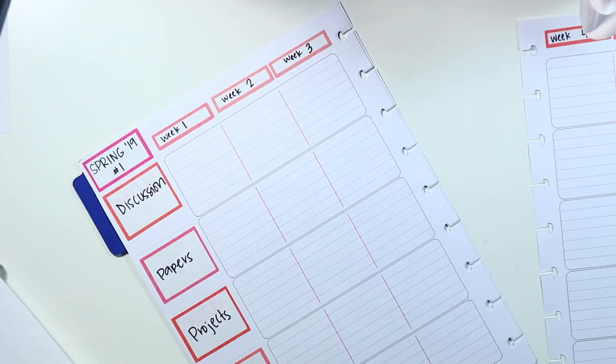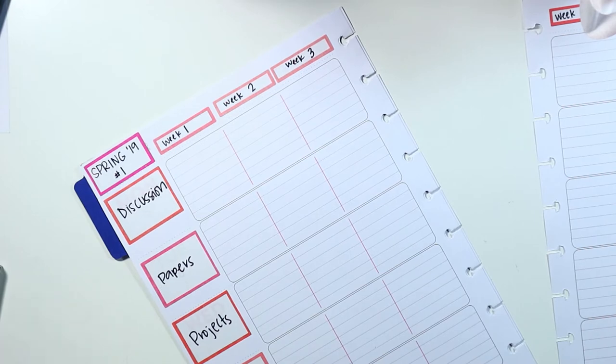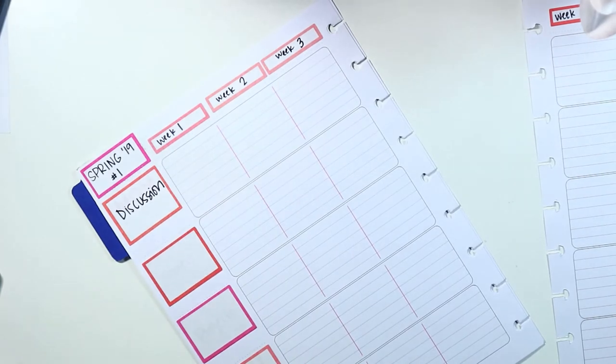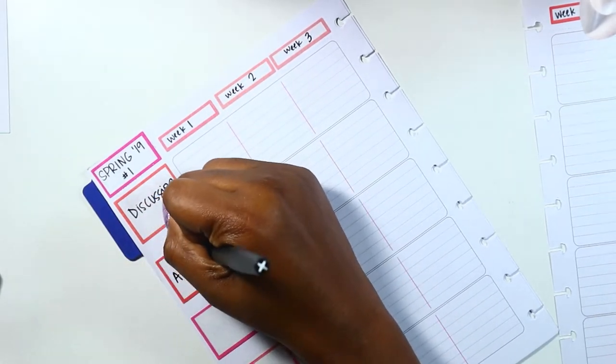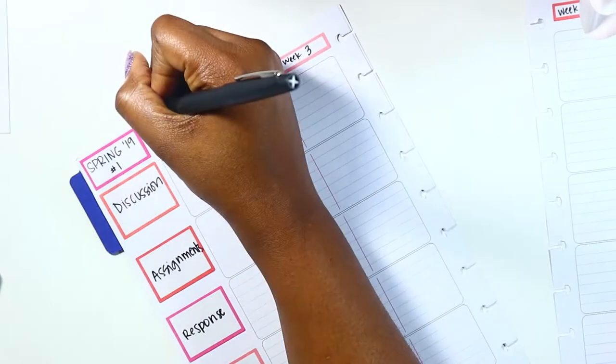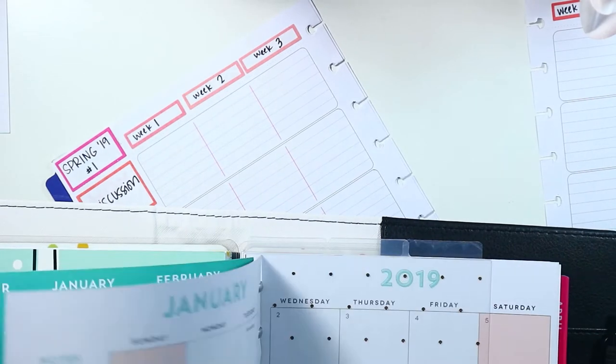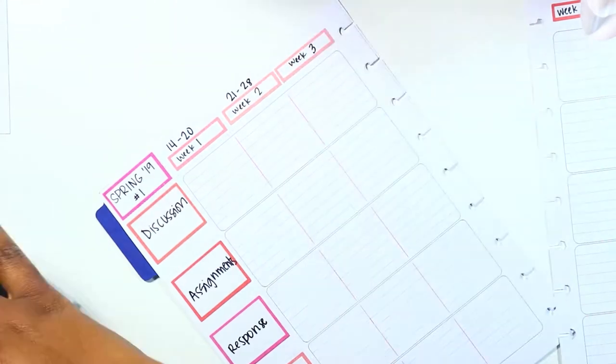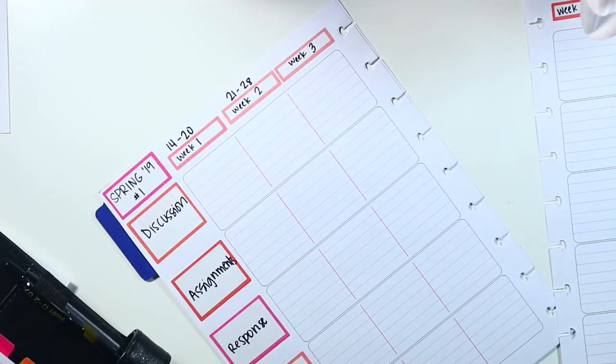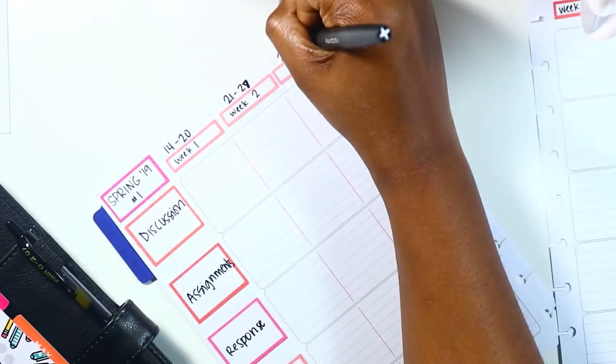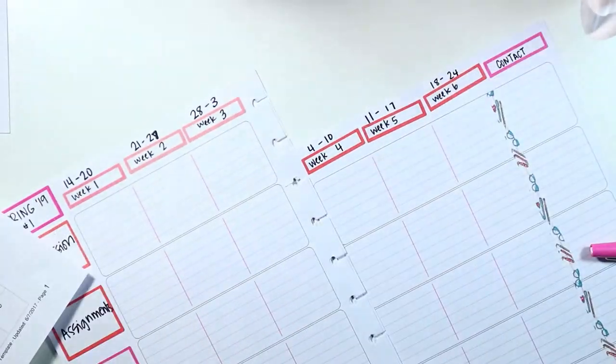If you've watched any of my student planning videos before, you know that I like to pick two colors because I always take two classes throughout the regular school year, and then summer I sometimes take three. So like I said, I went back and covered those up because I put the wrong labels there, and I used my colorful boxes stickers. So I just have discussion, assignments, response, exams, and when I have to upload to a system that we use called live text.